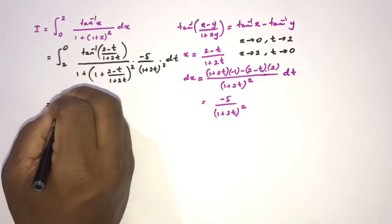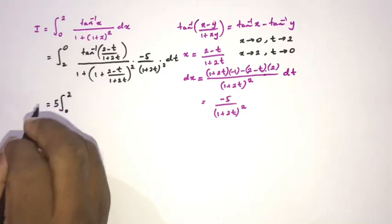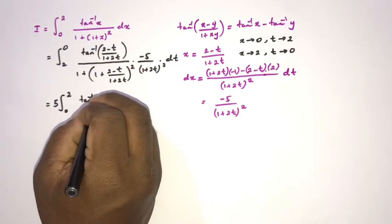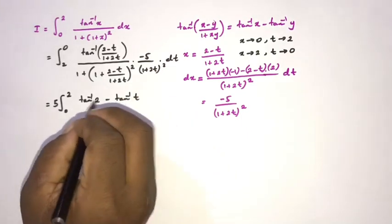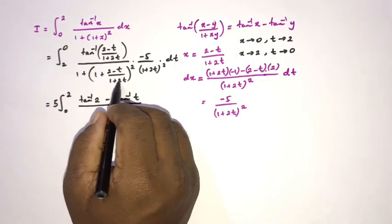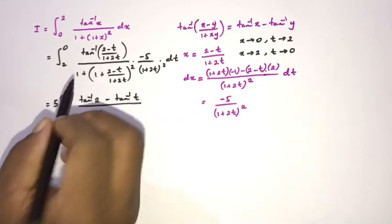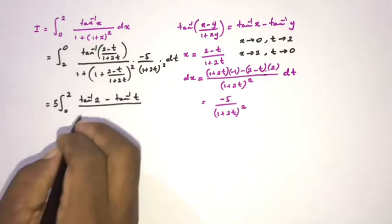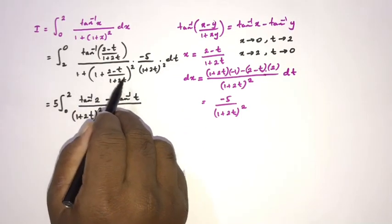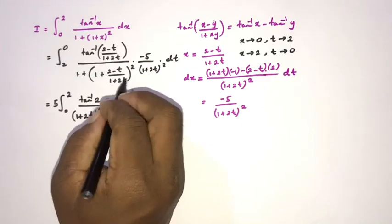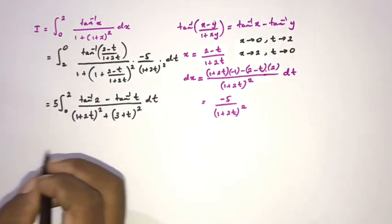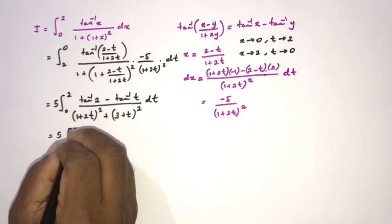We can interchange the boundaries — this cancels the minus sign — giving 0 to 2, with the factor 5 taken outside. By the inverse tan subtraction formula, inverse tan of (2 minus t)/(1 plus 2t) becomes inverse tan 2 minus inverse tan t. Now simplifying the denominator: (1 plus 2t) squared cancels, and expanding gives 1 plus (1 plus 2t) squared plus (2 minus t)(1 plus 2t), simplifying to 5t squared plus 10t plus 10.